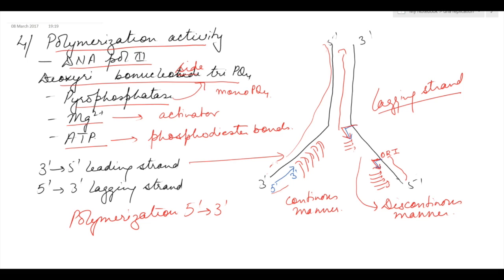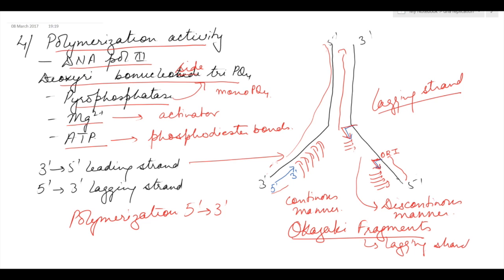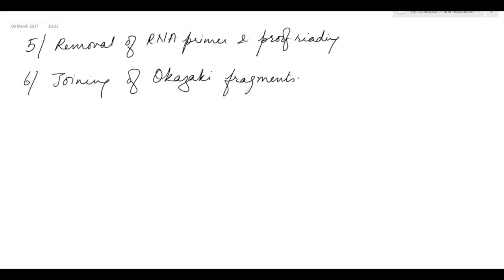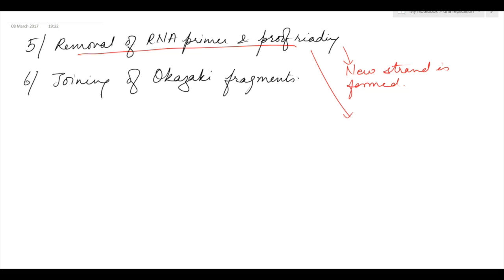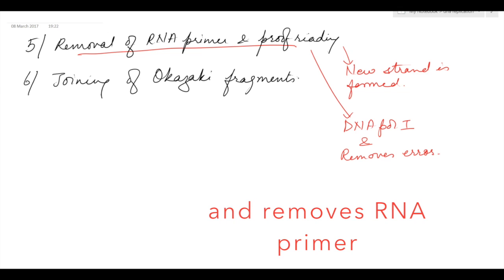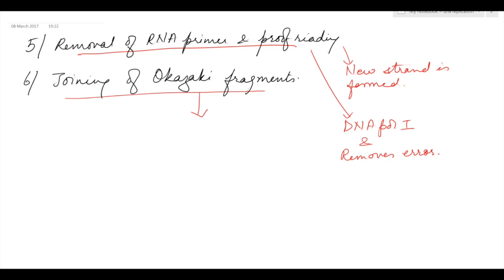The discontinuous fragments formed in the lagging strand were discovered by Okazaki, so they are referred to as Okazaki fragments — seen only in the lagging strand. After the new strands have been formed, the RNA primer is removed. Proofreading is done by DNA polymerase 1, which also removes any errors. Finally, the Okazaki fragments formed in the lagging strand are joined by polynucleotide ligase.